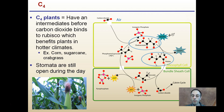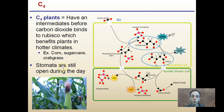C4 plants have an intermediate before carbon dioxide binds to the rubisco, which benefits the plants in hotter climates. Corn, sugarcane, and crabgrass are examples of C4 plants. The stomata are still open during the day, which is different than a CAM plant. Notice those intermediates — oxaloacetate and malate — highlighted here as an intermediate step before carbon dioxide binds with the rubisco.